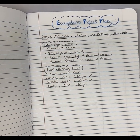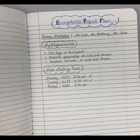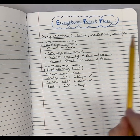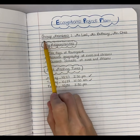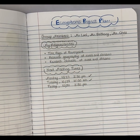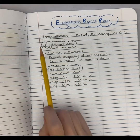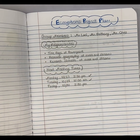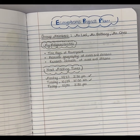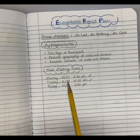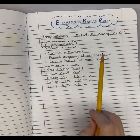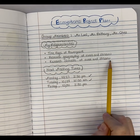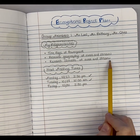I have pretended as though I am in a group with Miss Bethany and Miss Chris. The first thing you're going to do is list out who your group members are. Then the second thing you want is a section titled 'My Responsibilities.' I like to circle it so that it pops out, and you need to leave enough space that you can write down your responsibilities within the group.